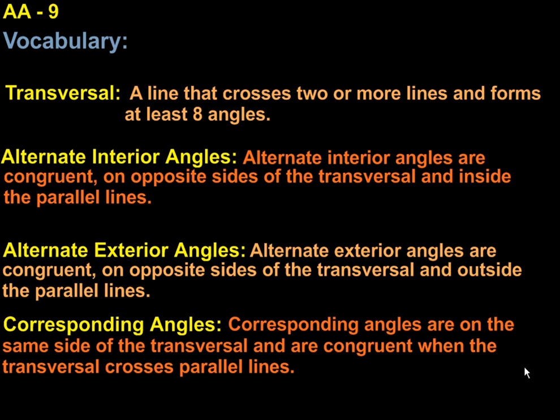We'll take a look at the vocabulary one more time. A transversal is a line that crosses two or more lines and forms at least eight angles.